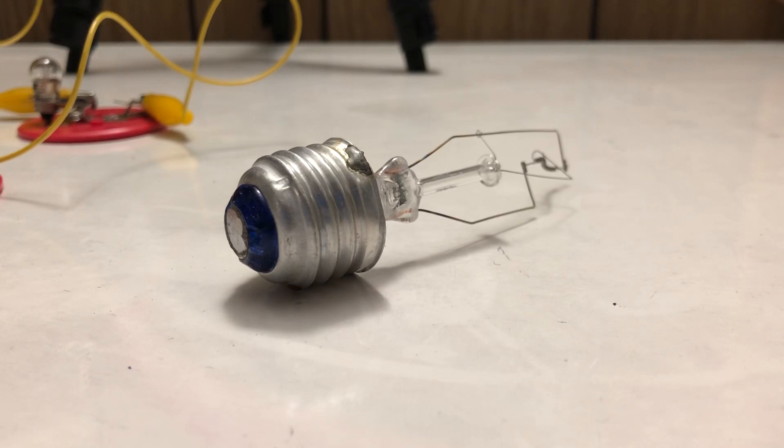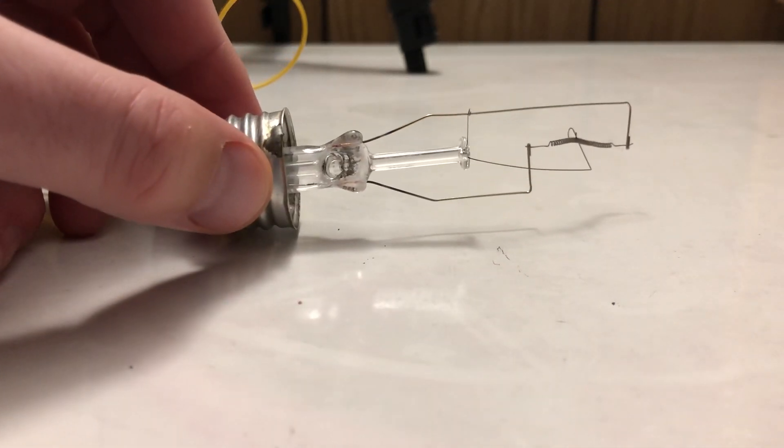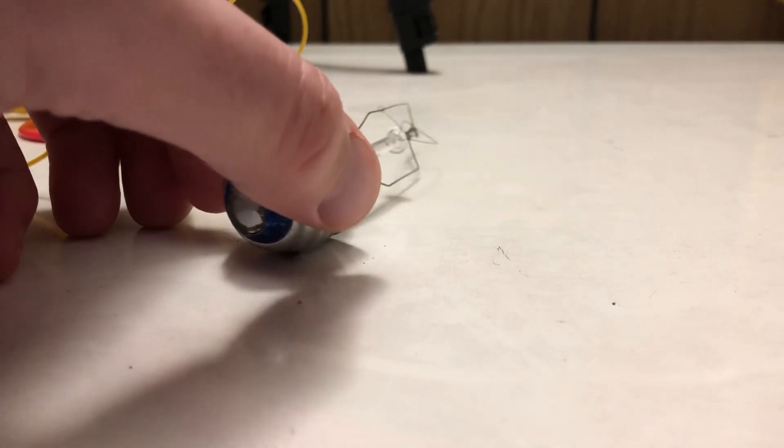Welcome back. In this video we're going to look at the internal parts of a light bulb. I have here a broken light bulb, so let's start at the bottom.